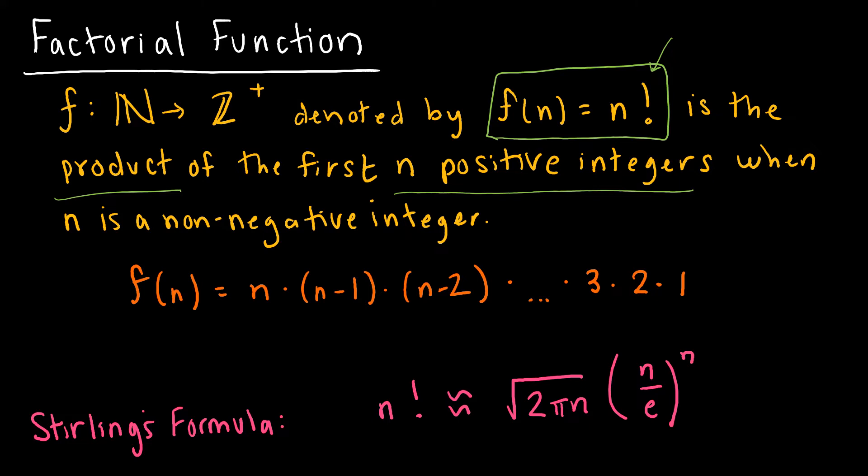So I give you an f of n here, but let's say f of 4, I would take 4 times 3 times 2 times 1. That would be my factorial function, 4 times 3 times 2 times 1. So again, symbolically, it's n, n minus 1, n minus 2, all the way down until you get to 1.